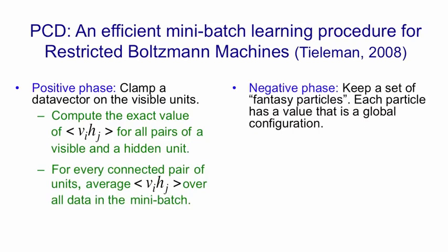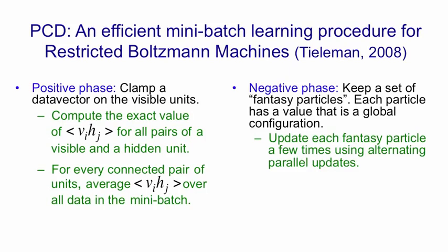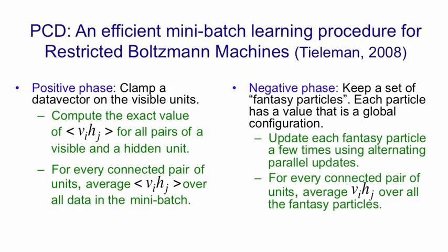For the negative phase, you keep a set of fantasy particles—that is, global configurations—and then you update each fantasy particle a few times by using alternating parallel updates. After each weight update, you update the fantasy particles a little bit and that should bring them back close to equilibrium. Then for every connected pair of units, you average v_i h_j over all the fantasy particles and that gives you your negative statistics. This algorithm works very well and allows RBMs to build good density models of sets of binary vectors.